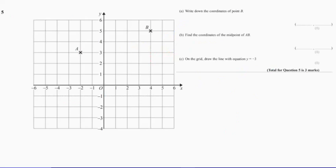Question 5. Write down the coordinates of point B. So it's 4, 5. Remember you go across first. So it's 4, 5.